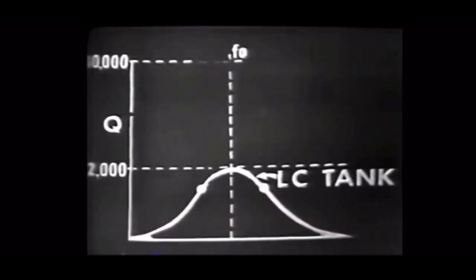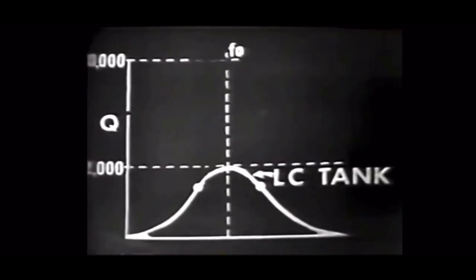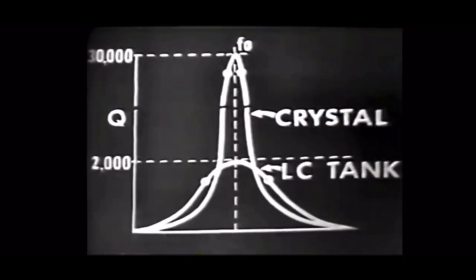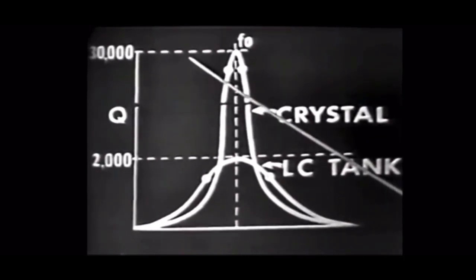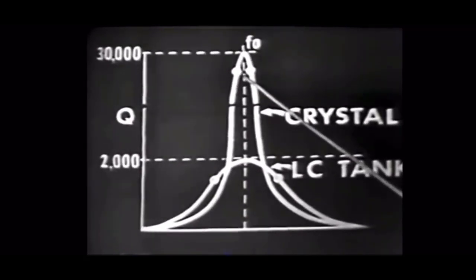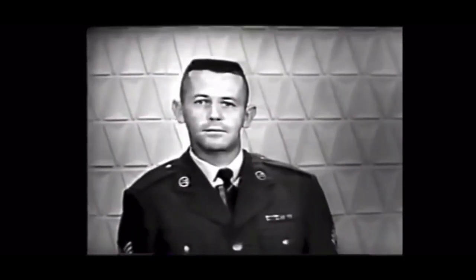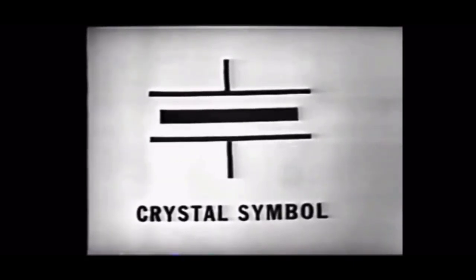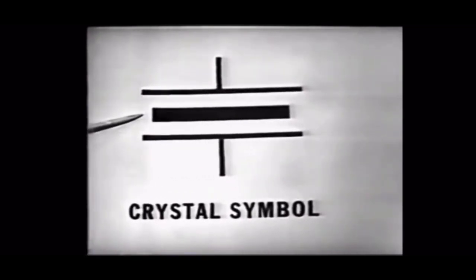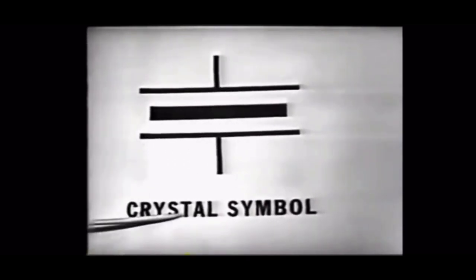The Q of an LC tank circuit is seldom greater than 2,000, whereas the Q of the crystal is sometimes as great as 30,000. Because of this high Q, the crystal has much better frequency stability. Looking at the schematic symbol for a crystal used as the frequency determining device in an oscillator circuit: the two plates represent the crystal holder, while the area between them represents the crystal itself.